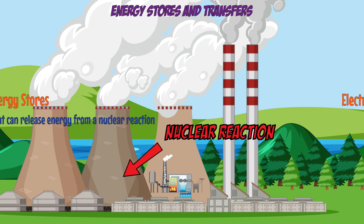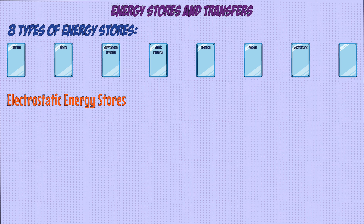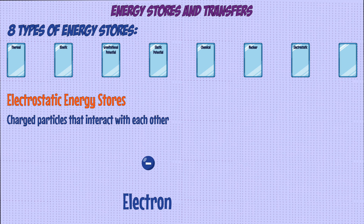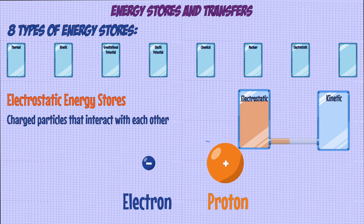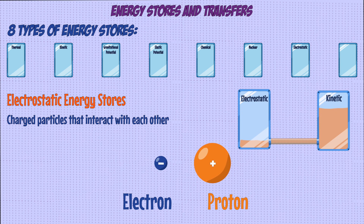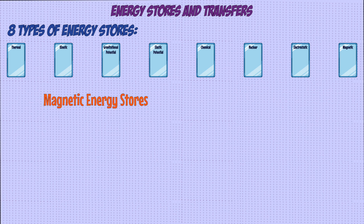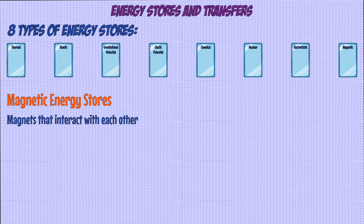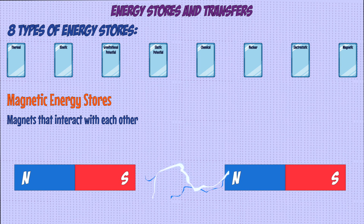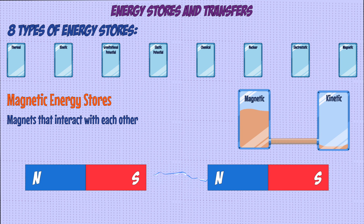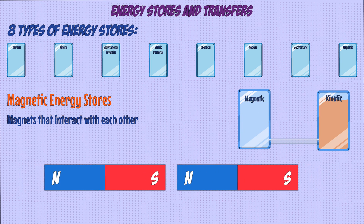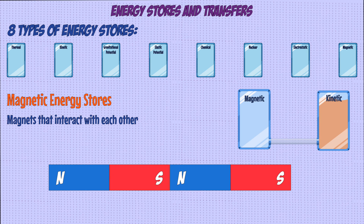The seventh type is electrostatic energy stores, which exist for objects or particles that are charged and interact with each other. For example, electrons are negatively charged and protons are positively charged — the energy in their electrostatic energy stores gets transferred to kinetic energy stores when they're attracted to each other. Finally, magnetic energy stores are similar to electrostatic ones but work with magnets. If you had a north and a south pole attracting, the energy in their magnetic store gets transferred to their kinetic energy store, moving them closer together.